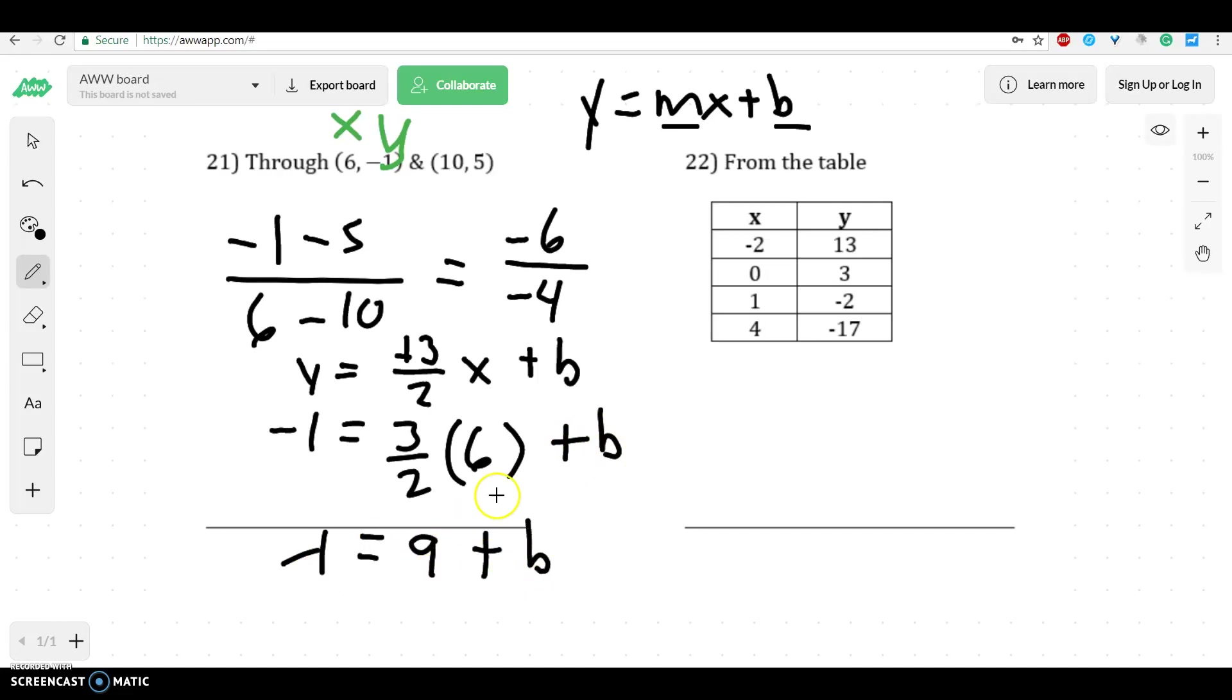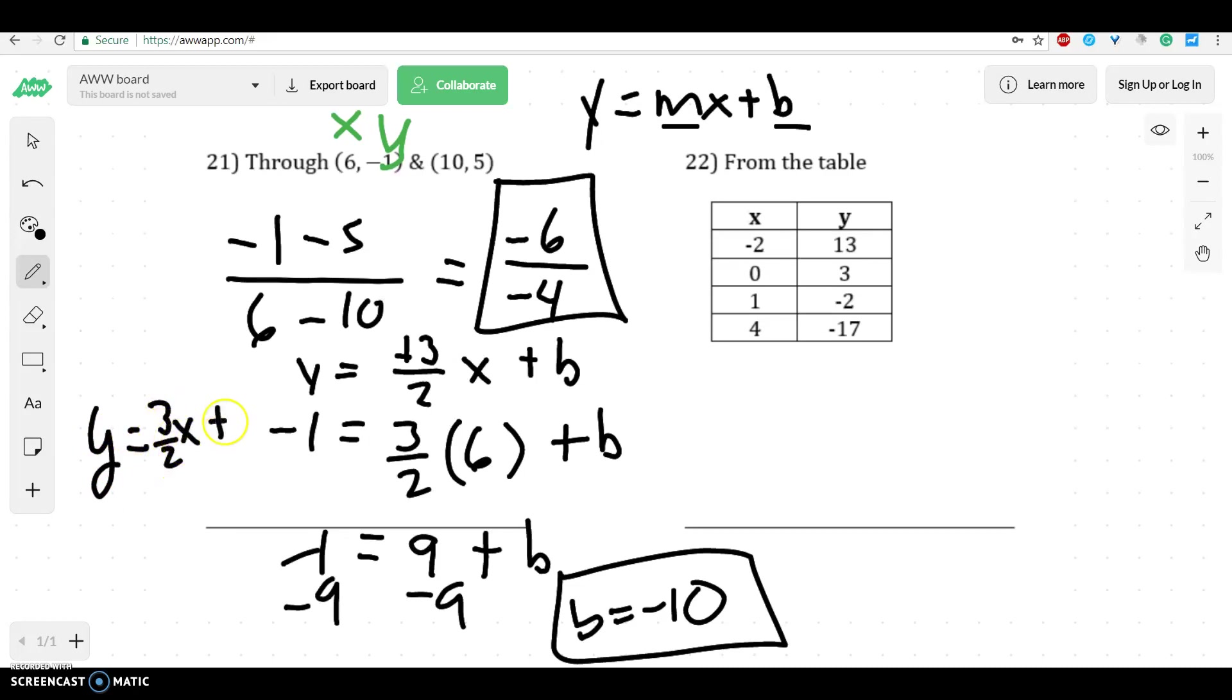That would be 18 divided by 2, which would be 9. And then this is a really important point. Some people try to divide and stuff. Just look what sign's in between your b and your 9. It's addition. So I'd subtract and I'd have b equals negative 10. Well, if I know b equals negative 10 and m equals 3/2, we could write our line equation to be y equals 3/2x plus 10.